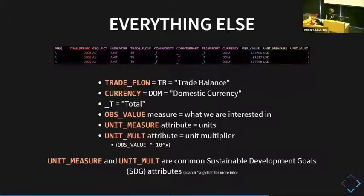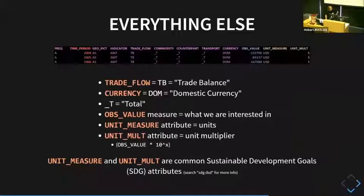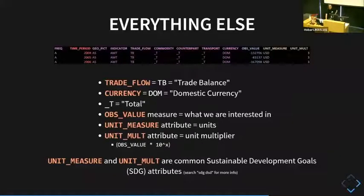The indicator dimension is used to figure out exactly what that indicator column means — it has a concept with a code list, for example AMT translates to amount. Some of those columns have a little underscore T, which just means total — not specifying anything for that dimension. The OBS_VALUE is the value we're actually interested in. UNIT_MEASURE is just the units — in this example, the observational values are in US dollars. UNIT_MULT is just an exponent, so we multiply those values by 1,000. Unit measure, unit multiply, and observation value are part of a common Sustainable Development Goals set of attributes shared by most SDMX organizations.